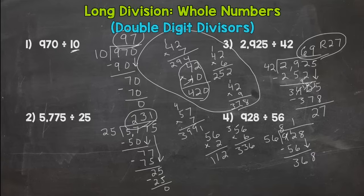6 is my number there. 6 times 56 is 336. Subtract, 2, 3. So 16 remainder 32.